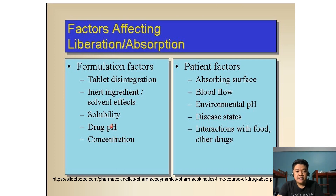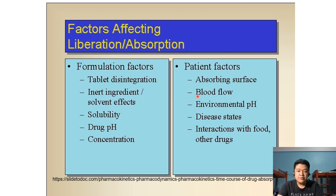Concentration also affects absorption. Patient-related factors include the absorbing surface and blood flow — tissues or organs with a rich blood supply will have greater absorption of a particular drug. Environmental pH will also affect absorption because it influences the ionization of the drug. Disease states and interactions with food and other drugs also play a role.